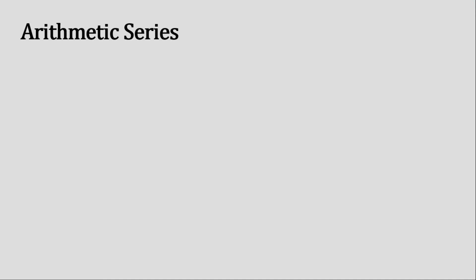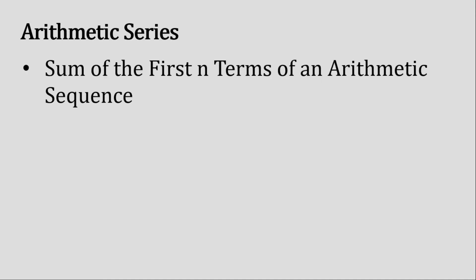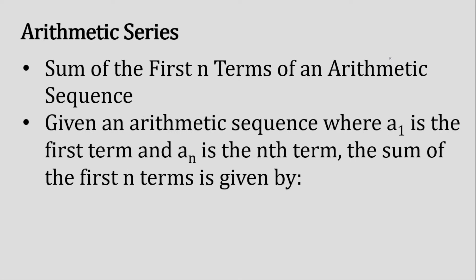Let us first define what arithmetic series is. The sum of the first n terms of an arithmetic sequence is called an arithmetic series. Given an arithmetic sequence where a sub 1 is the first term and a sub n is the last term, the sum of the first n terms is given by this formula: S sub n is equal to n over 2, multiplied by the sum of a sub 1 and a sub n.